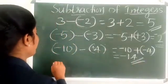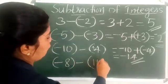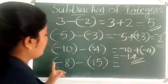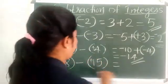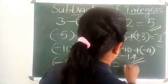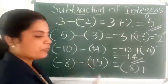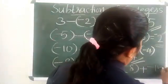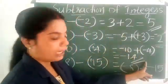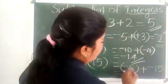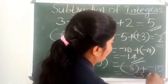Consider another example: minus 8 minus 15. Here, 15 means positive 15. Add the additive inverse of positive 15, which is minus 15. So minus 8 plus minus 15 — both have the same sign, so add and put the same sign. Negative 8 plus negative 15 gives negative 23.